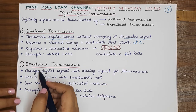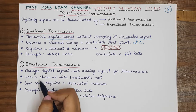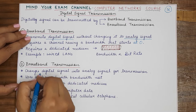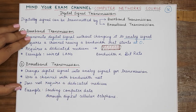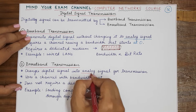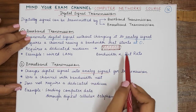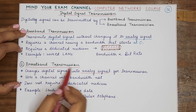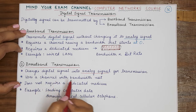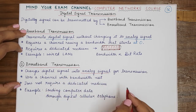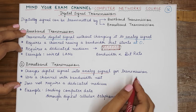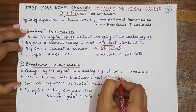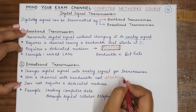Coming to the second kind — broadband transmission. In broadband transmission, to transmit a digital signal, this signal is first converted into an analog signal, and this analog signal is then sent over the transmission link. In broadband transmission, the channel used may not have a bandwidth that starts at zero.